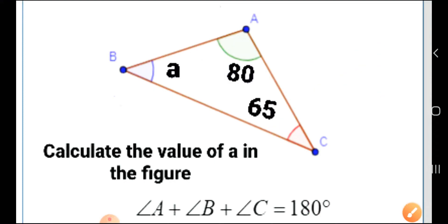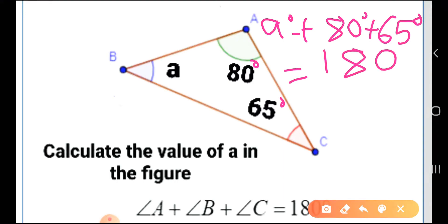We know that angle A plus angle B plus angle C altogether equals 180 degrees. So first we need to add: a degrees plus 80 degrees plus 65 degrees equals 180 degrees. That means a degrees equals...